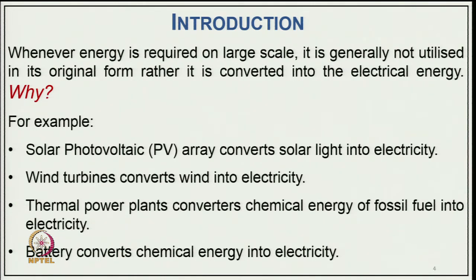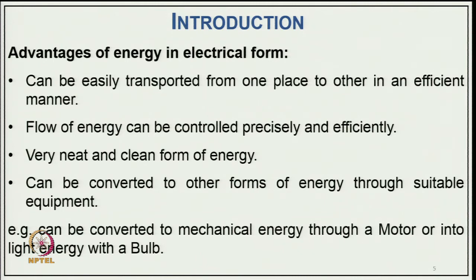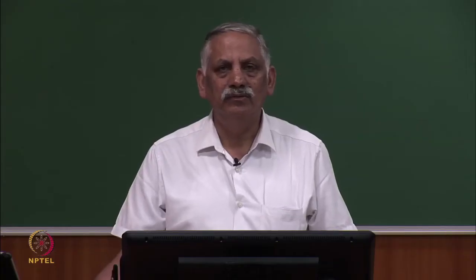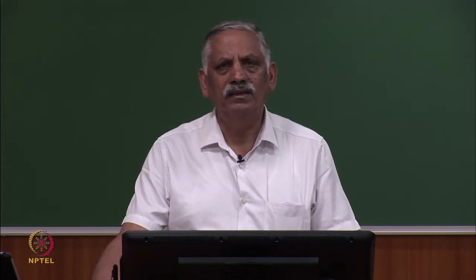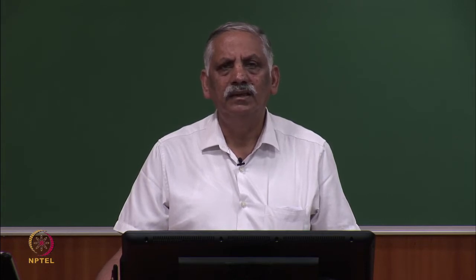Electricity is neither available in nature in original form nor utilized in its final form — it is only converted, transmitted, and finally utilized in other forms. The advantages of electrical energy: it can be transported from one place to another efficiently; the flow of energy can be controlled very precisely; it is a neat and clean form of energy, not visible; and it can be converted to other forms such as mechanical energy, light, or sound through suitable equipment.